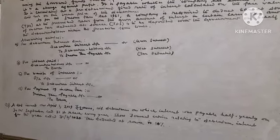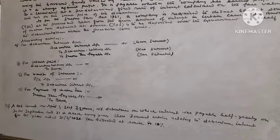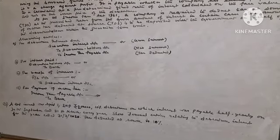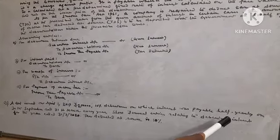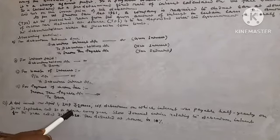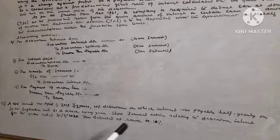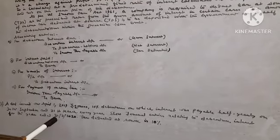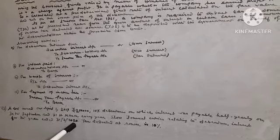Now, a question has been given relating to debenture interest. A Limited issued on 1st April 2019, Rs. 2,00,000 at 10% debentures, on which interest was payable half-yearly on 30th September and 31st March every year. Pass journal entries relating to debenture interest for the year ended 31st March 2020. Tax deducted at source is 10%.